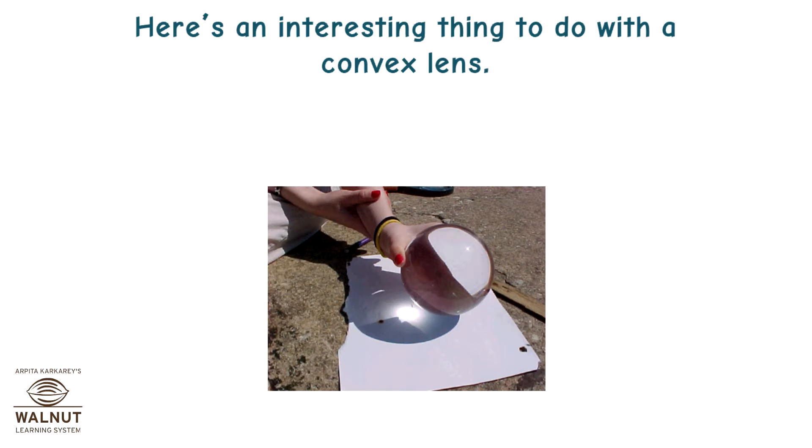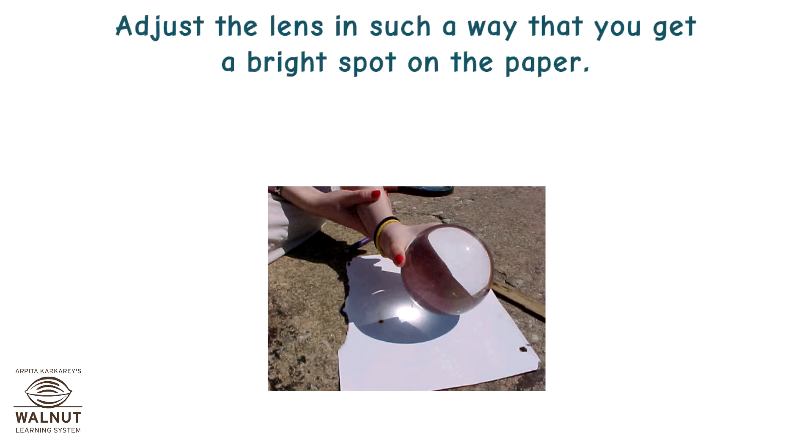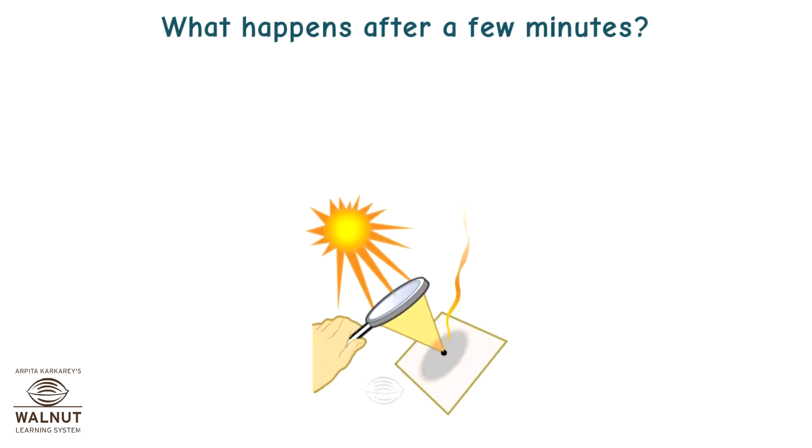Here is an interesting thing to do with a convex lens. Put it in the path of sun rays and place a piece of paper on the ground. Adjust the lens in such a way that you get a bright spot on the paper. Hold the lens and the paper steady. What happens after a few minutes? The paper burns.